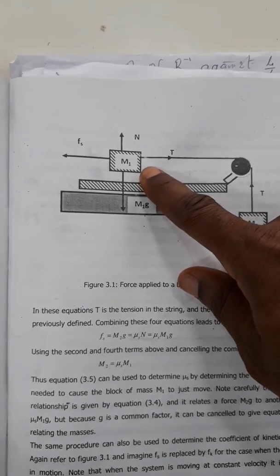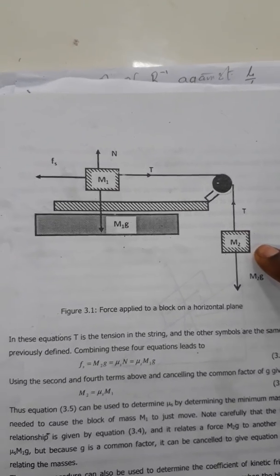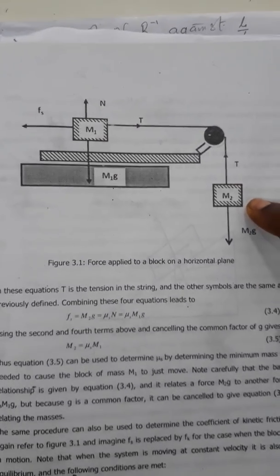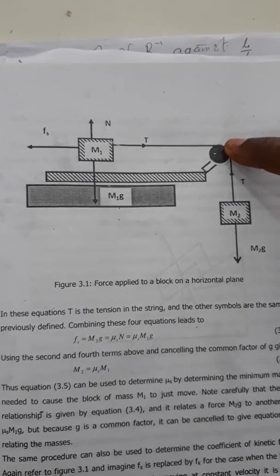We have M1, which represents the mass of the wooden block. We have M2, which represents various masses loaded on a weighing scale pan, then a frictionless pulley.